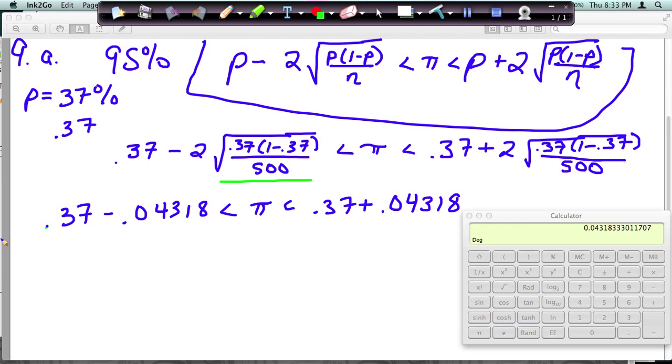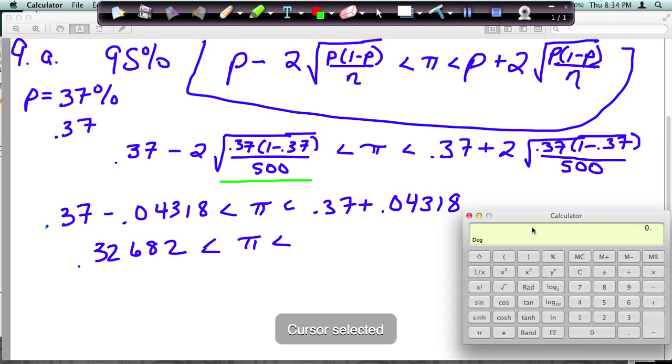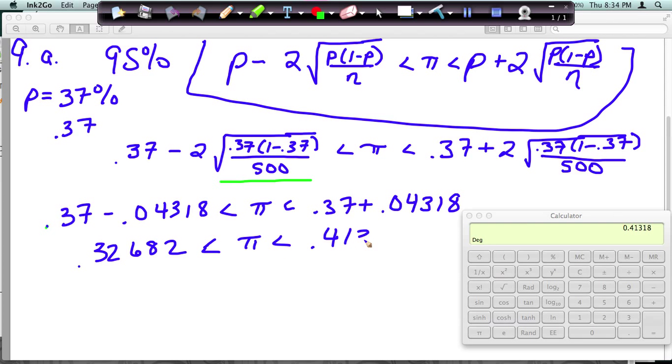So over here when you subtract, and I can show you on the calculator, 0.37 minus 0.04318. And we get 0.32682, and then over here when I add 0.37 plus 0.04318, we get 0.41318.